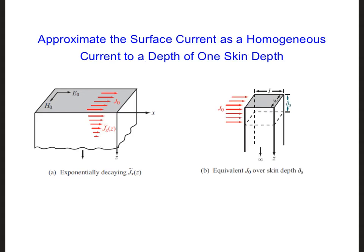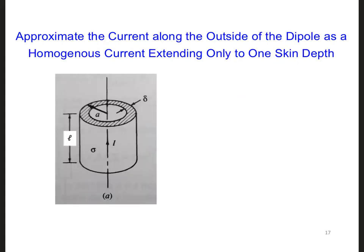Now to simplify the geometry, which also simplifies our calculation for determining our loss, we can approximate the exponentially decaying J as instead a homogeneous current extending to one skin depth. So here one skin depth, which is one over alpha. Using this approximation along the outside of our circular dipole shown here, we have an equivalent homogeneous current. So this again represents the homogeneous J current density. And it's flowing to a depth of one skin depth along the outside of the dipole.